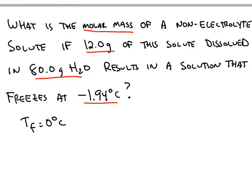Whenever you have a solution, the freezing point has to go down, the boiling point has to go up. So we can use the formula, change in freezing point is equal to the Van't Hoff factor times the constant for freezing times molality.